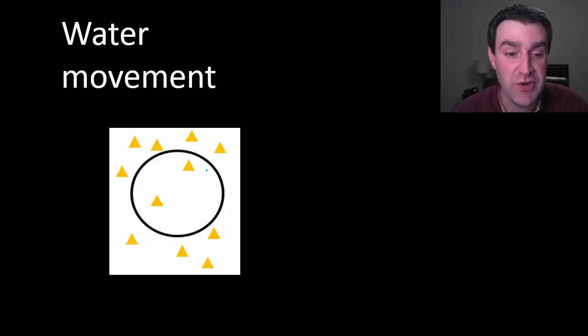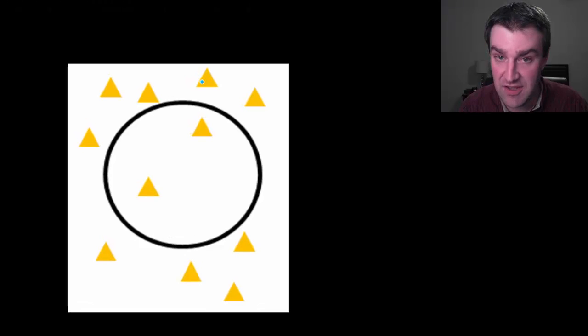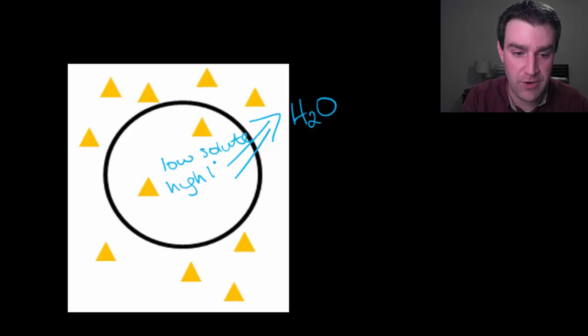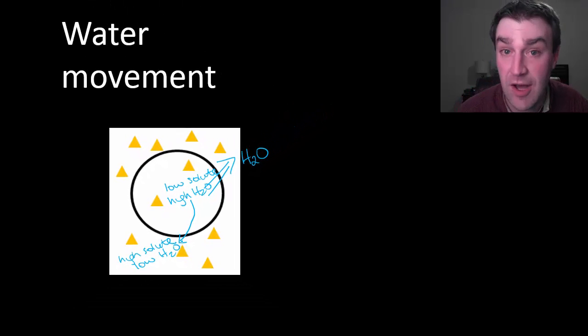As another quick example we could use our shortcut now and say there's more solute outside the cell in this picture and so water will follow the solute by moving out. There's a low amount of solute inside and so there must be a high amount of water. But outside there is a high amount of solute and so there must be a low amount of water. We're still going from high water to low water when the water is leaving the cell.